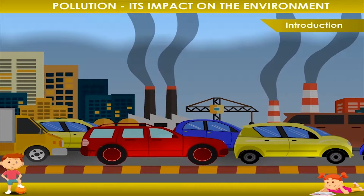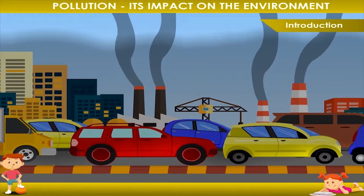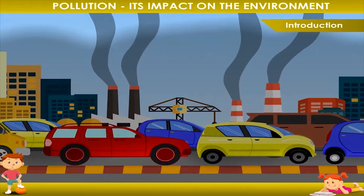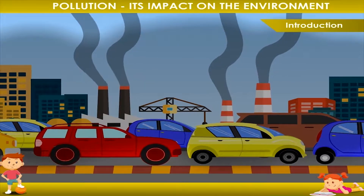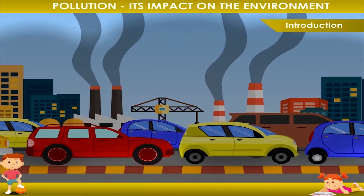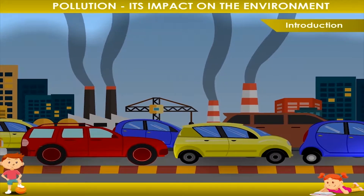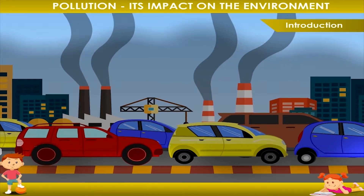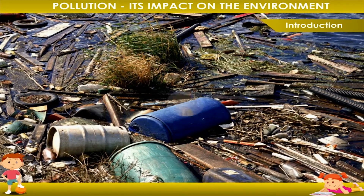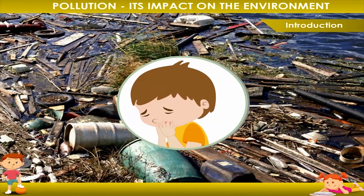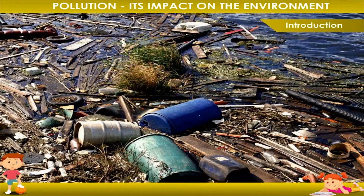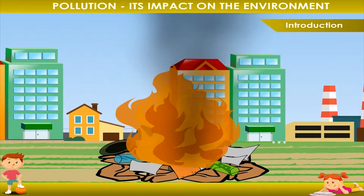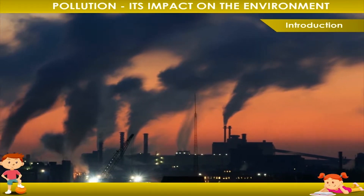We are living in an industrial era. We can see an enormous amount of technological development around us — factories, new vehicles, and many more new ways of living. However, the advancement of new technology is causing a lot of pollution in the environment, making it unclean and unhealthy. Any addition of harmful waste to the environment is called pollution, and the harmful substance that causes pollution is called a pollutant. Smoke from factories is an example of a pollutant.